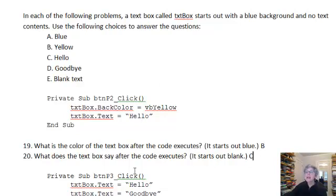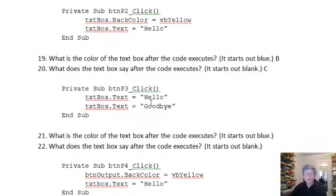Alright. Next piece of code. And these all start over. So we aren't following through, it's starting fresh. So here we have two lines of code that changed the text in the text box. So what color is the text box after the code executes? Well, it started out blue. It's still blue. We didn't change it. And what does the text box say? Well, notice we made it say hello and then right away we made it say goodbye. As soon as we put the goodbye in, the hello was erased. So this is going to be D.